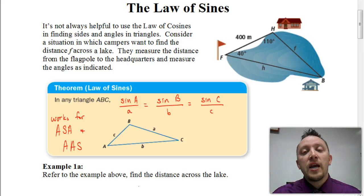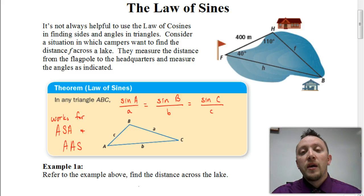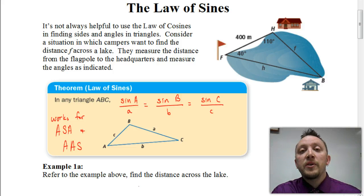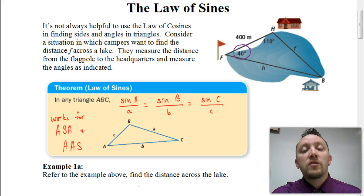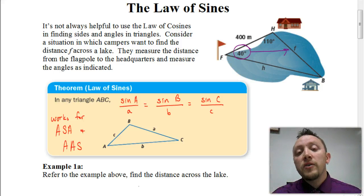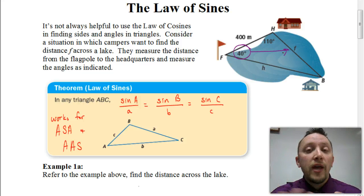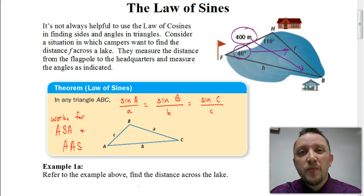Let's go ahead and look at this example. This example is trying to figure out the distance across the lake, and the distance we're looking for is side F. If you look at that situation, we have two angles and the included side — we would say this is an angle-side-angle situation. When setting up the law of sines, I want to start with the given information: an angle and the side across from it that are known. We know this angle is 40 degrees, but the side across from it we don't know. The 110-degree angle — the side across from that one we don't know either. The only side that's known is the side that's 400 meters, but it's across from angle B and they don't give us angle B.